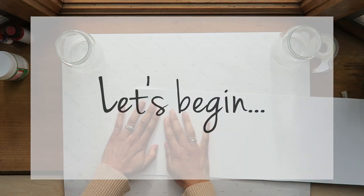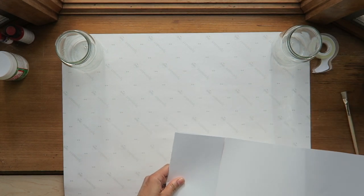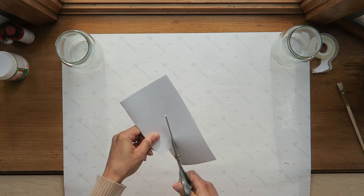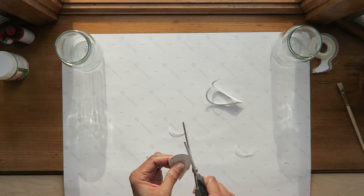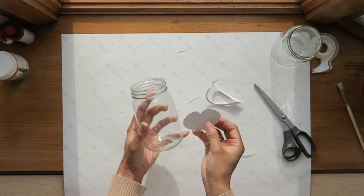To begin, you'll want to use some thick poster board or thick cardstock. I'm using this poster board that I had left over from another project, and I'm cutting out the shape of a heart and trimming off the edges to make it the exact size that I would like.